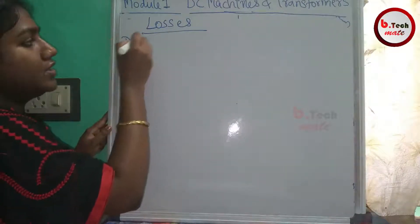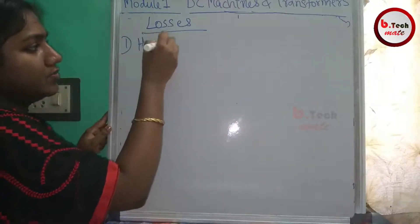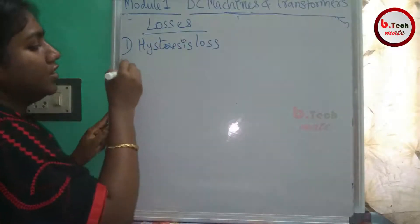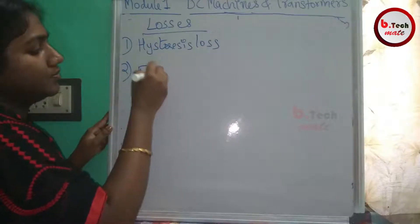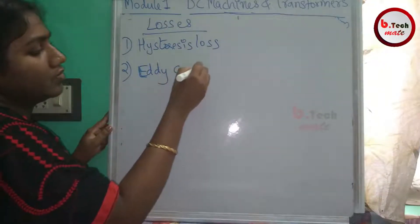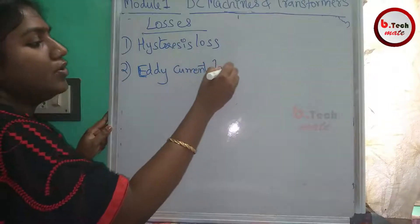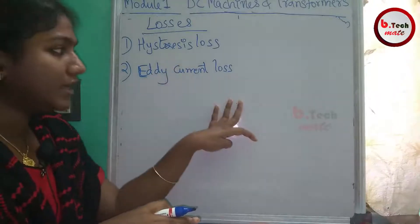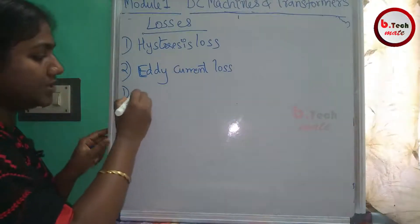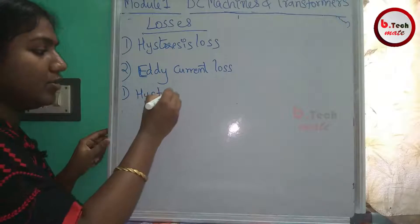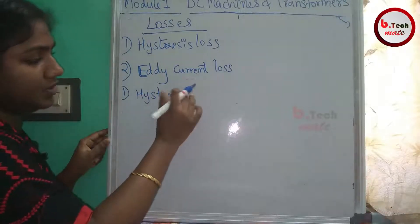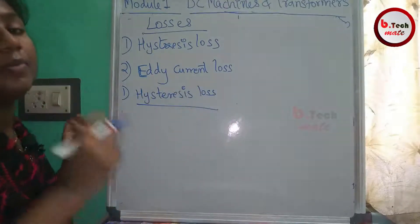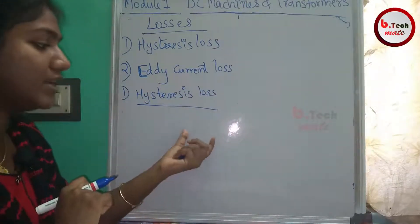In the DC machine armature, there are two core losses. The first one is Hysteresis Loss and the second one is Eddy Current Loss. How do we consider a magnetic field? We consider a magnetic field and a magnetic force.